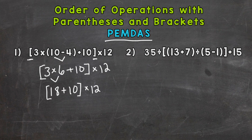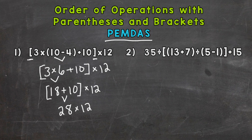Now we're left with just addition within those brackets, so that's what we need to do next. 18 plus 10 is 28. Now that we've solved everything within the brackets and there are no operations left, the brackets are gone. We can bring down our multiply by 12, which gives us an answer of 336.